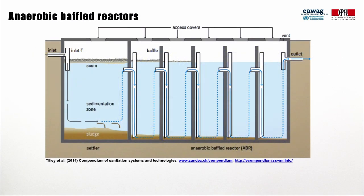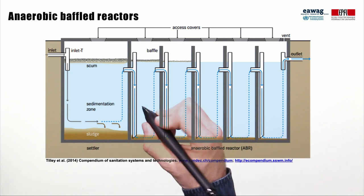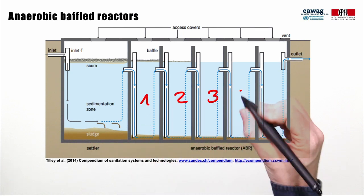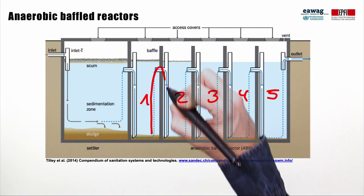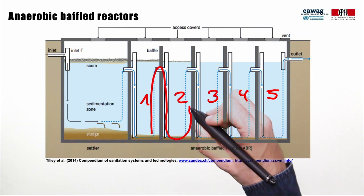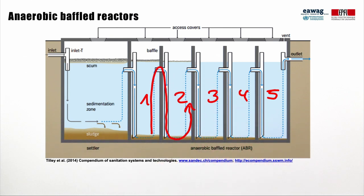This slide shows a schematic of an anaerobic baffled reactor as used in Devanali. These are concrete or plastic tanks with a series of baffles — in this schematic, there are five. They are designed for removal of organics. The baffles force the effluent to flow down into the next chamber and then up through a sludge layer. This contact increases the performance of organic removal, for example, in comparison to a septic tank.